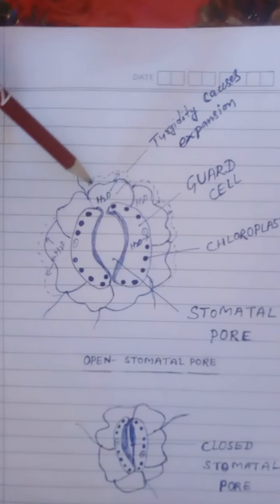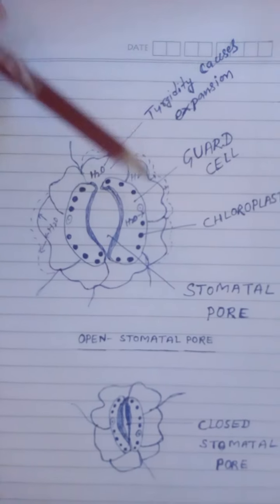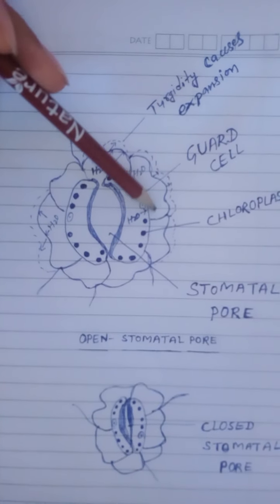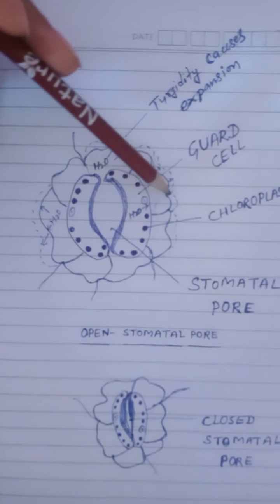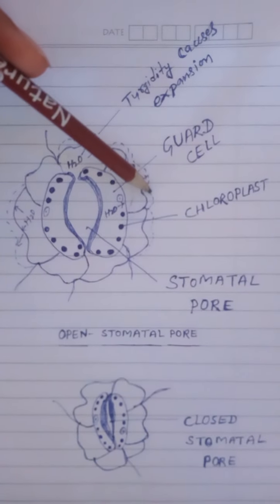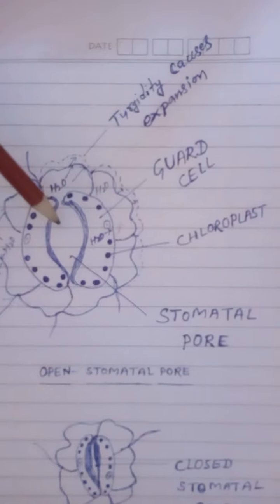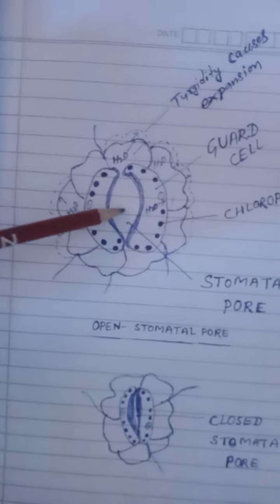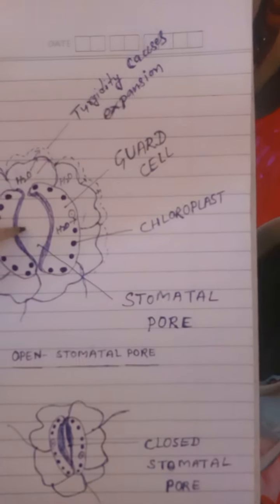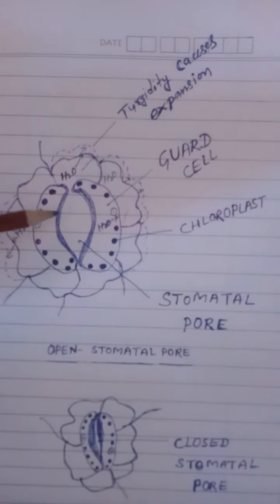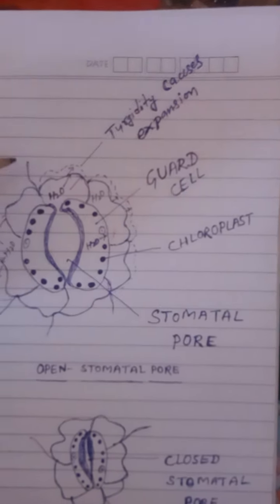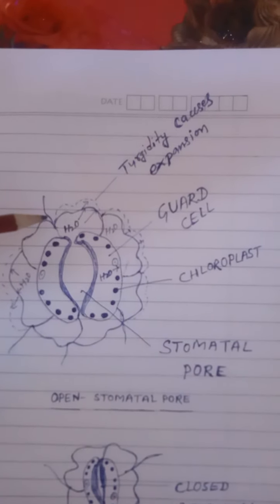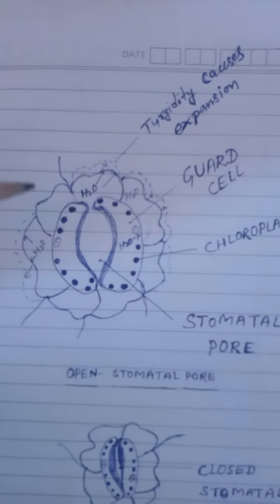This turgidity causes expansion — the guard cell wall shifts slightly outward, and this expansion causes the opening of the stomatal pore. This is called opening of stomatal aperture, and in this way stomata get open due to turgor pressure, which is created by water filling inside the subsidiary cell and guard cell, causing expansion in the walls and leading to stomatal opening.